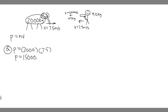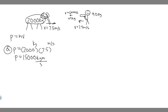When we measure momentum, we measure it in kilogram meters per second. You can write it as kg·m/s — notice the mass is in kilograms and the speed is in meters per second, so it's kilogram times meters over seconds. So 15,000 kg·m/s is your answer to part A.